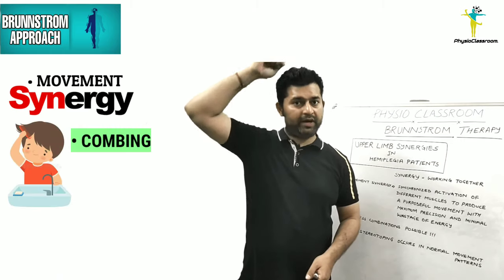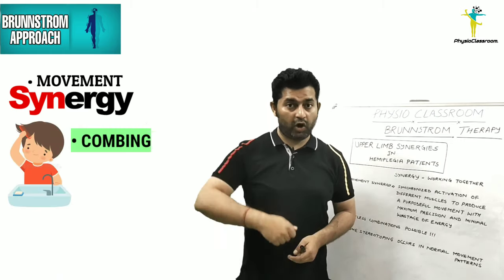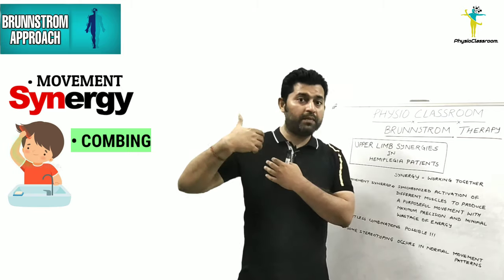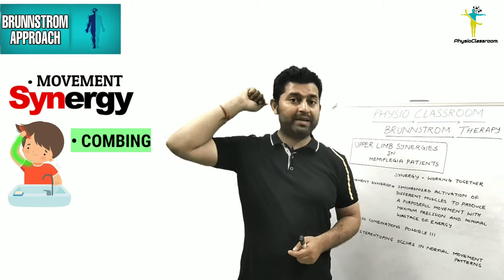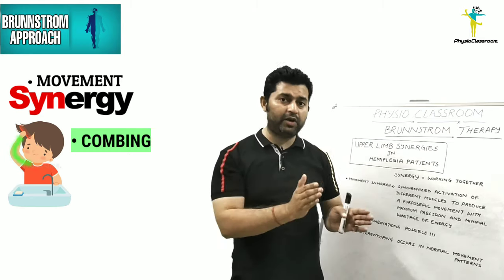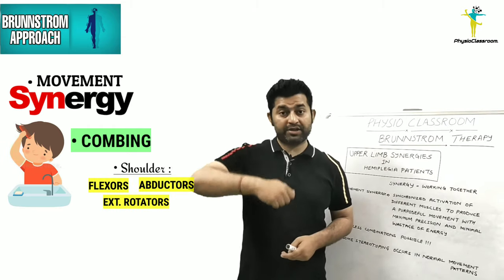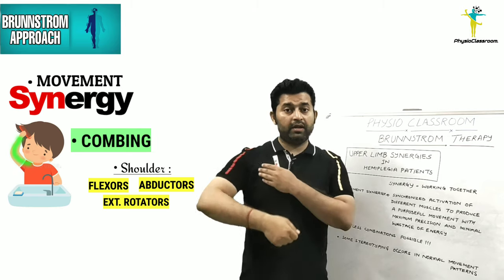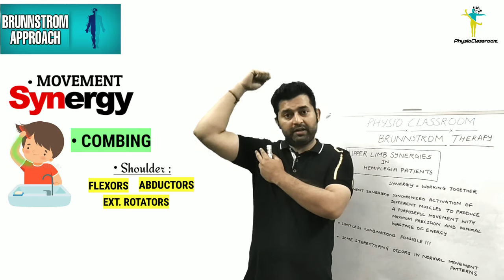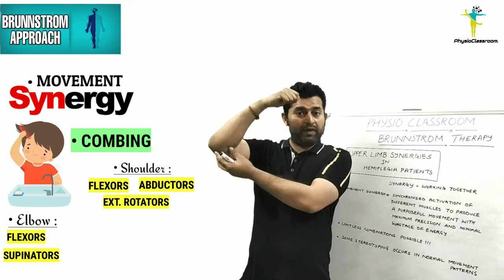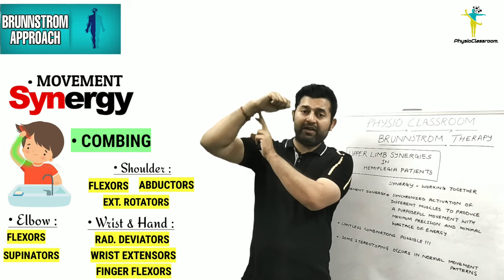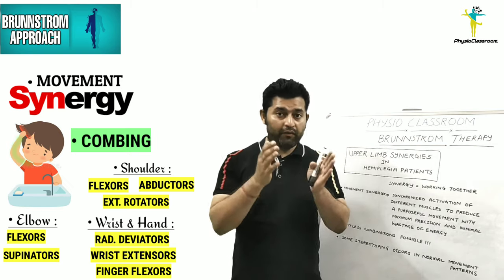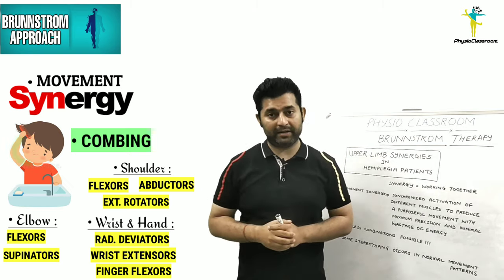Let's understand movement synergies with an example. If I am doing the combing activity, this movement synergy is brought about by co-activation of the shoulder muscles, elbow muscles, and the muscles of the forearm, wrist, and hand in a particular synchronized manner. Specifically, it involves synergistic activation of the shoulder flexors, abductors, and external rotators, along with elbow flexors and supinators, wrist radial deviators and extensors, and finger flexors — all forming one synergy pattern.